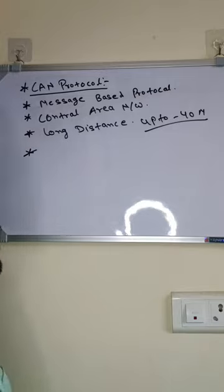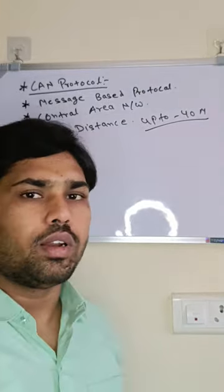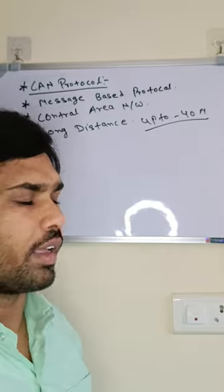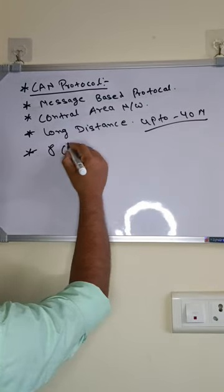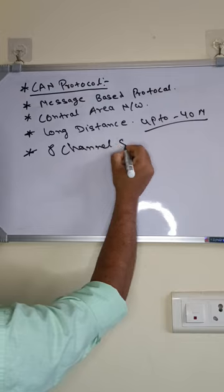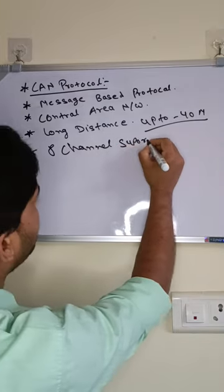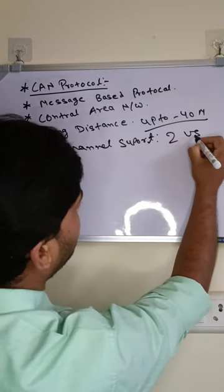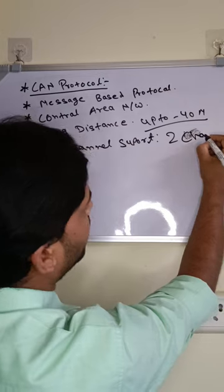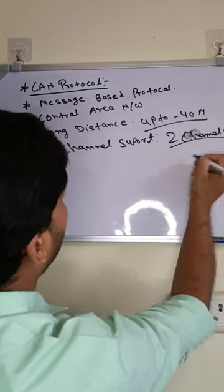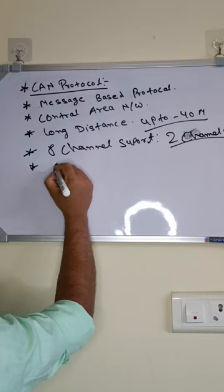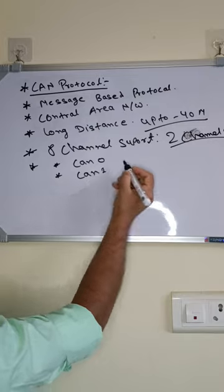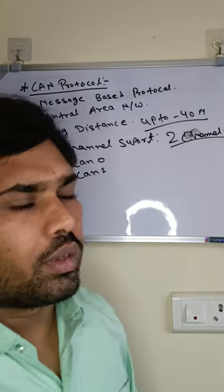In CAN there are a total of eight channels, but in our project we are going to use only two channels: CAN0 and CAN1, which correspond to CAN High and CAN Low. So eight channels are supported but we use only two channels.